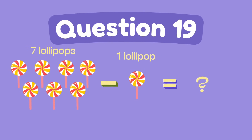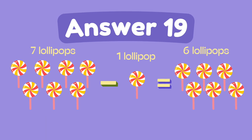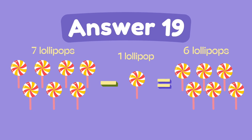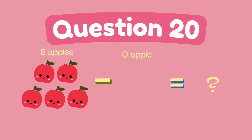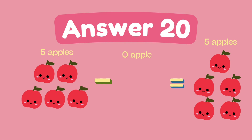What is 7 minus 1? The answer is 6. What is 5 minus 0? The answer is 5.